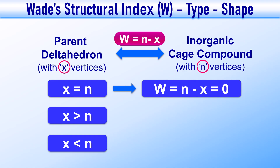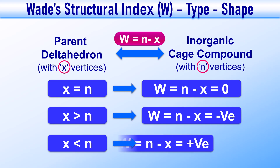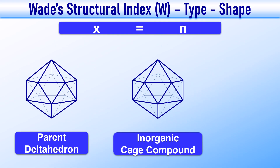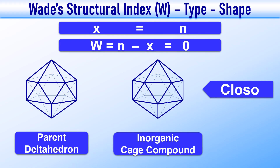If W is equal to 0, the structure is just like the parent deltahedron. If W is negative, it means a few vertices are missing from the parent deltahedron. And if W is positive, it means some extra vertices are present in the cluster compared to the parent deltahedron. When X equals N, the number of vertices in the parent deltahedron and the actual cluster compound are the same, and the compound is called a closo-type cluster. Here the Wade's index W, i.e., N-X, is 0.